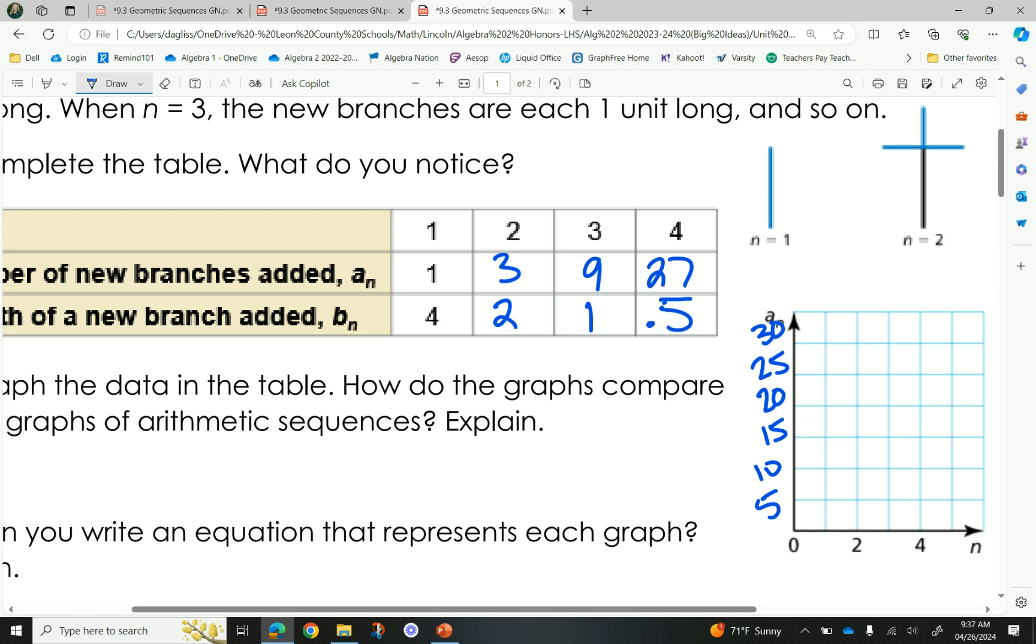Alright, Arlington, what did you notice about the 1, 3, 9, 27? Not cubing it. Something with a 3, though. Yeah, we're multiplying by 3. Good. So, we're multiplying by 3 as we move on.